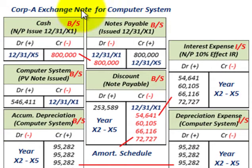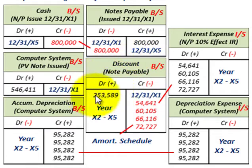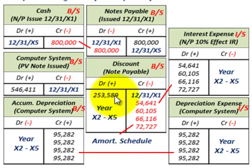Now let's look at our journal entries. Corporation A exchanged a note for the computer system. On 12/31/X1 when the note was issued: credit Notes Payable $800,000 on the balance sheet. The discount on notes payable — a contra account to notes payable — is debited for $253,589. To record the computer system as an asset at its present value of $546,411, we debit Computer System $546,411 plus the debit to Discount on Notes Payable $253,589, which balances with the credit to Notes Payable of $800,000.